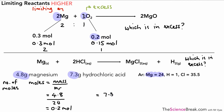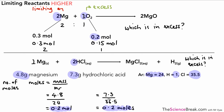For our hydrochloric acid we have 7.3 grams. The relative formula mass of HCl is 1 (H) + 35.5 (Cl) = 36.5. Doing the calculation gives 0.2 moles as well. So we've got 0.2 moles of magnesium and 0.2 moles of hydrochloric acid. The balanced equation tells us it's a 1-to-2 ratio: 1 mole of magnesium to 2 moles of hydrochloric acid. Here we have a 1-to-1 ratio, so we'd actually need 0.4 moles of hydrochloric acid to achieve the correct 1-to-2 ratio. We only have 0.2, so the hydrochloric acid is the limiting reactant in this example.